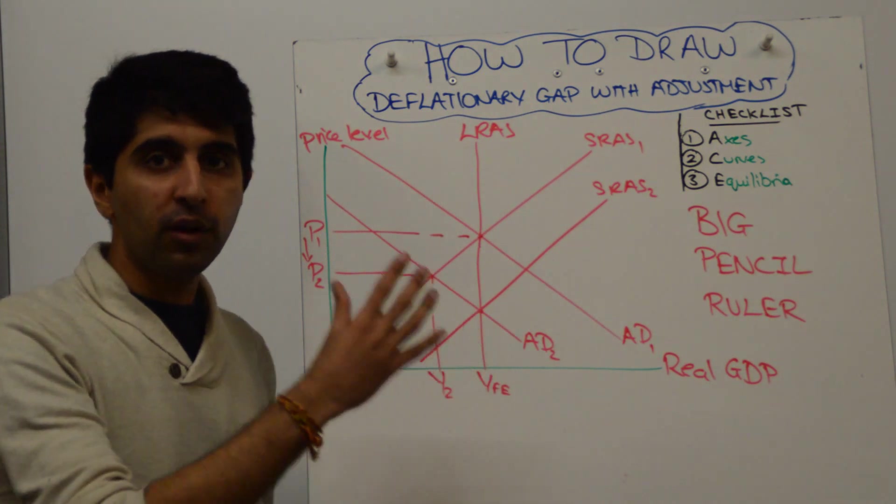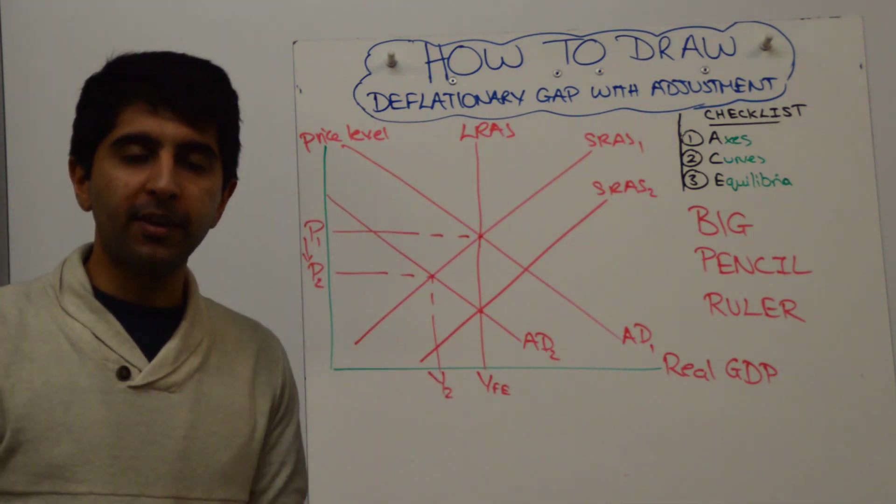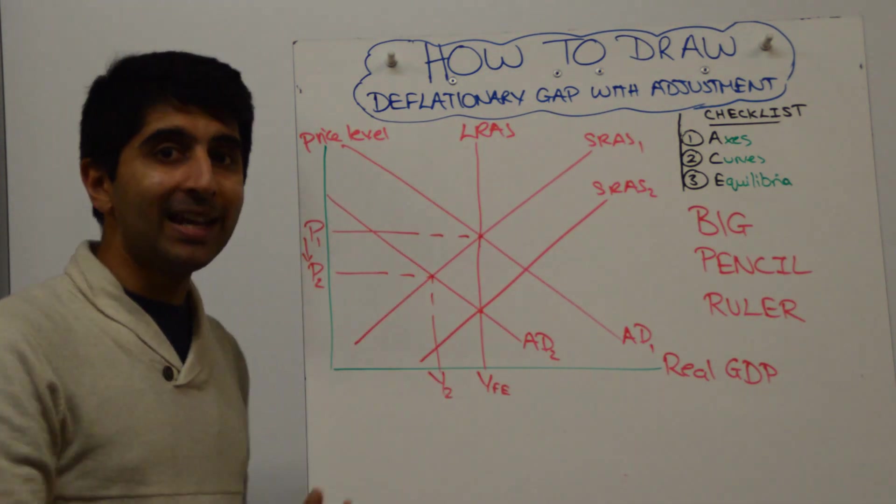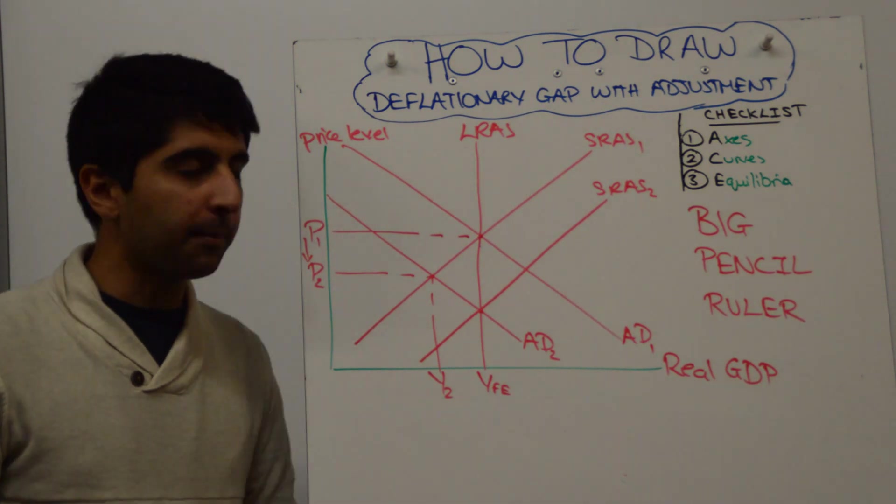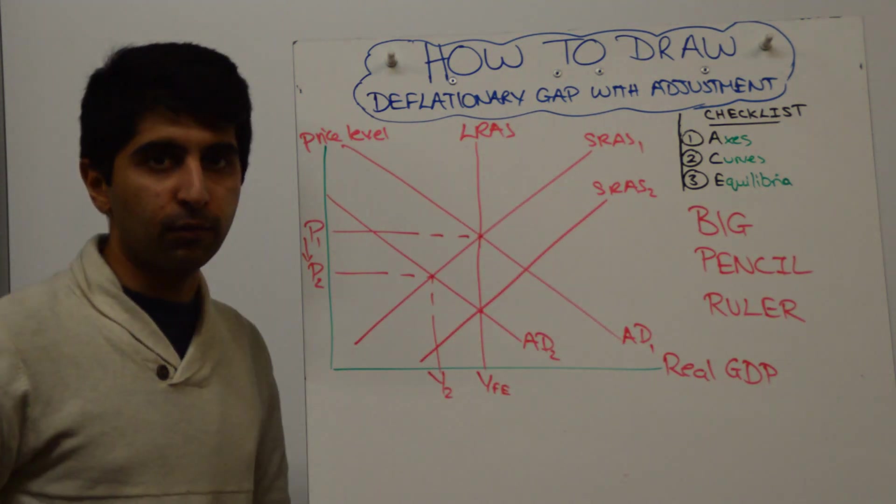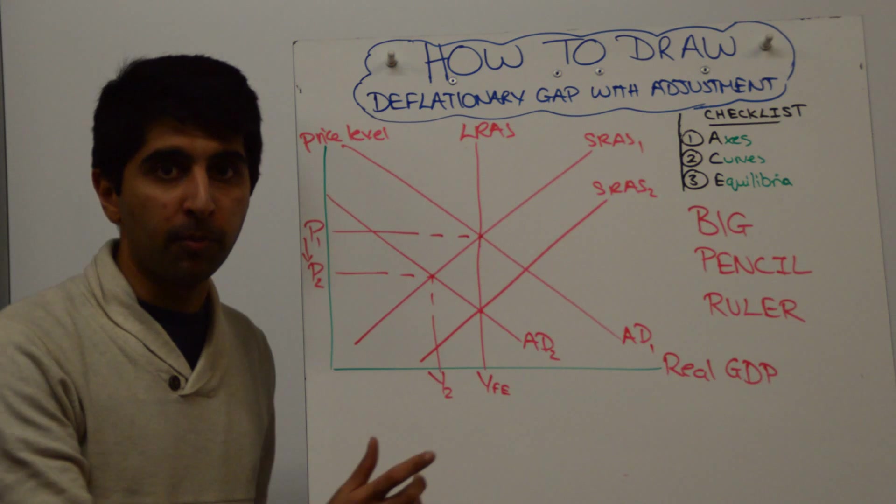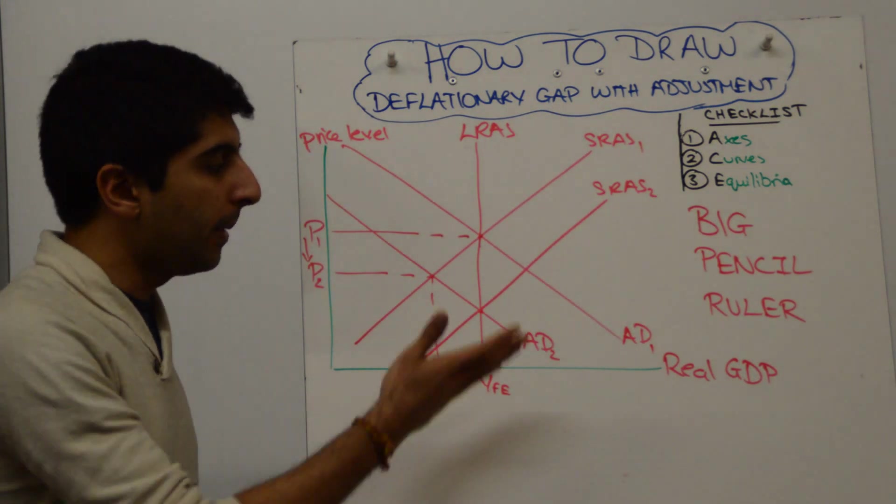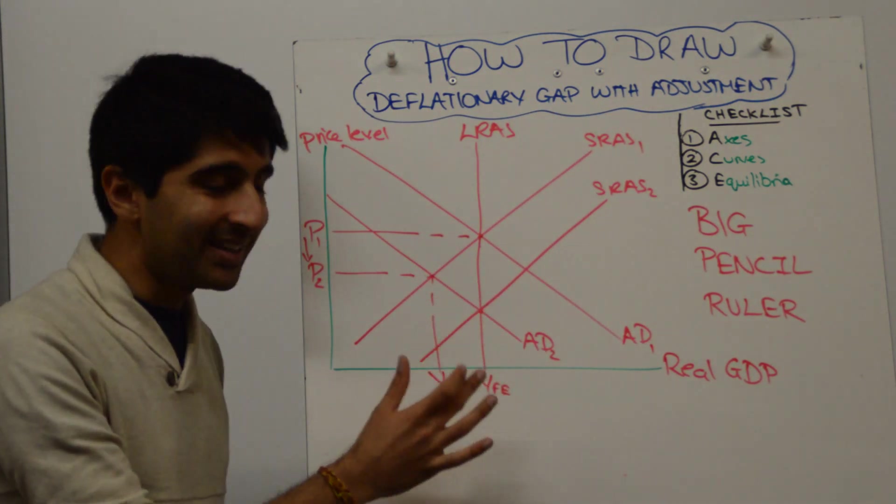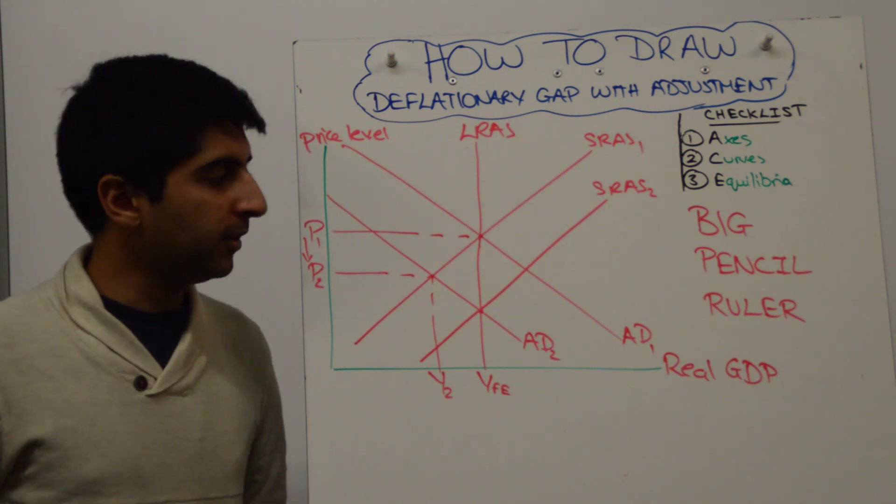So to recap, draw full employment, so equilibrium in the classical model first, shift AD to the left to show the deflationary gap, and then shift SRAS to the right to get back to full employment. When you shift SRAS to the right, make sure it cuts AD at the full employment level of output.